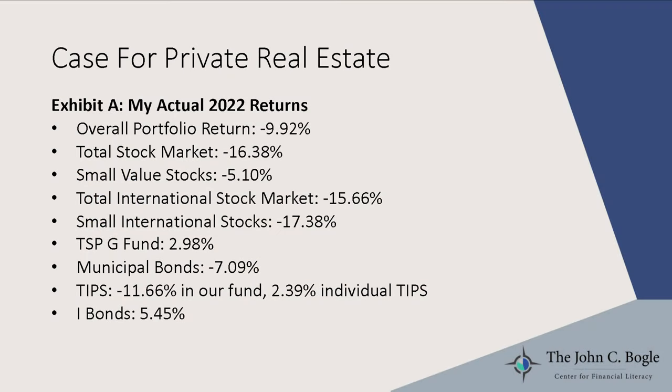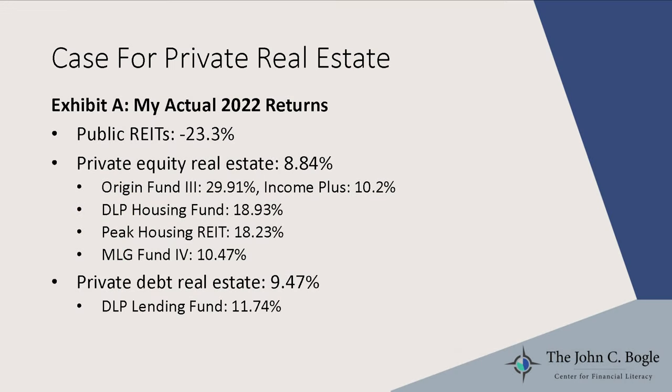Here's where the rubber meets the road. 2022 was not a great year for most of us — these are my actual portfolio returns. My overall return was about minus 10%. US stocks were down about 16%; small value did a little better; international did about the same; small international did even worse. Bonds didn't have an awesome year in 2022 either, and I bonds were one of those rare bright spots. But comparing my private real estate to my public real estate that year: my public real estate got hammered right along with the stock market — down about 23% — while my equity real estate did about 9%, and on the debt side, about 9.5%. To me, that says there's something here worth looking at more closely.